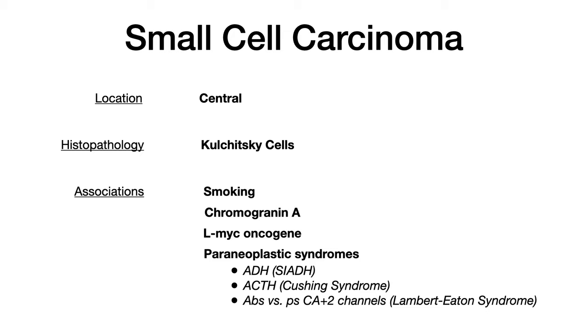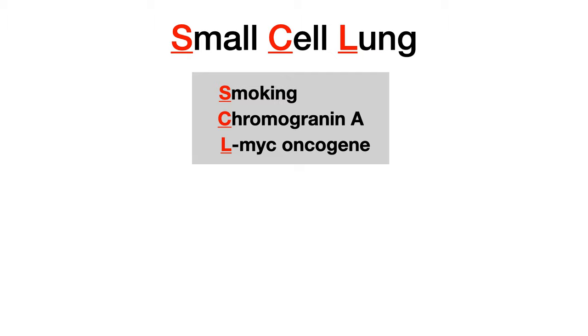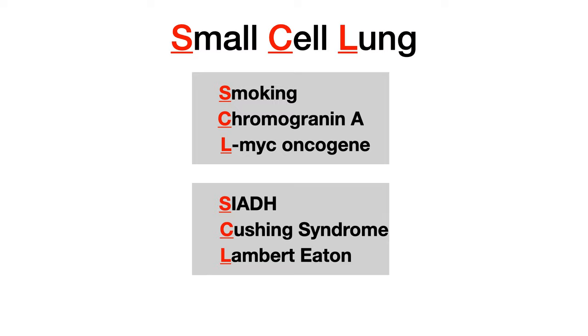When it comes to small cell carcinoma, the mnemonic is SCL — small cell lung. SCL tells us two things. First, the associations: S for smoking, C for chromogranin A, and L for L-myc oncogene mutation. Second, it tells us the paraneoplastic syndromes: S for SIADH, C for Cushing syndrome, and L for Lambert-Eaton syndrome. So small cell lung cancer — SCL — tells you both the associations and the paraneoplastic syndromes. If you're going to take one thing from this section, just know the paraneoplastic syndromes.